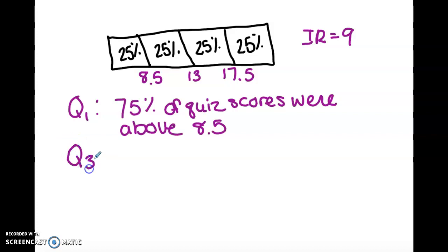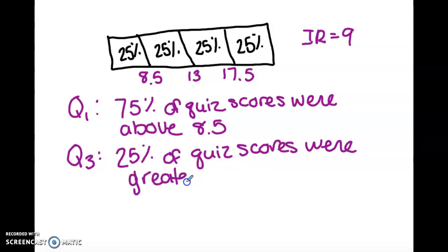And something I could say about Q3 would be 25% of quiz scores were greater than 17.5. So here's Q3, 25% is greater. Those aren't the only things I could say. Q3, I could have said 75% were lower than 17.5.